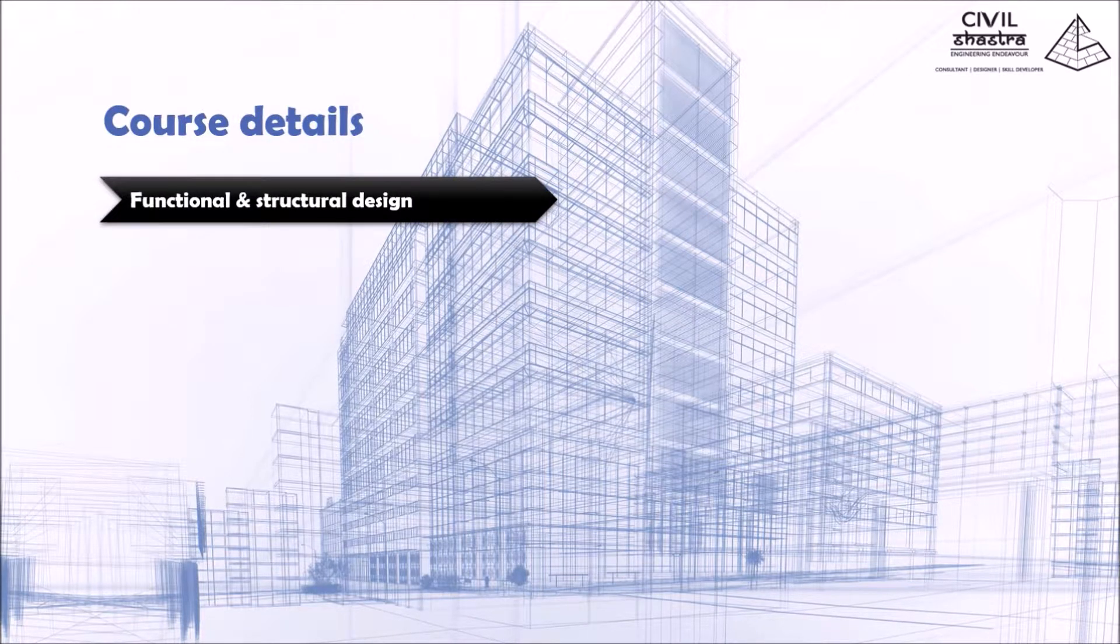The course will start from functional and structural designing. Functional designing is taken care of by the architects. In functional design, the landscaping, the placement of rooms, acoustics, lighting, ventilation, and heating—all these aspects are taken care of by the architects in the functional designing phase.